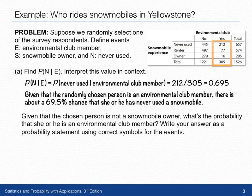In context, this means that given the randomly chosen person is an environmental club member, there's about a 69.5% chance that she or he has never used a snowmobile.